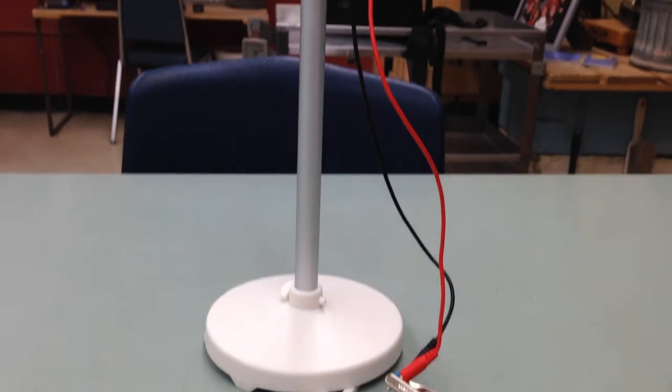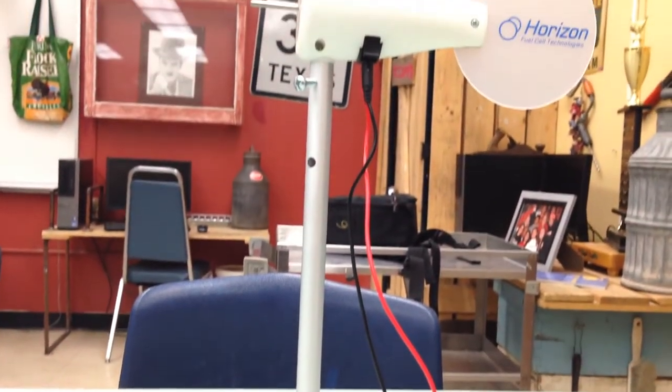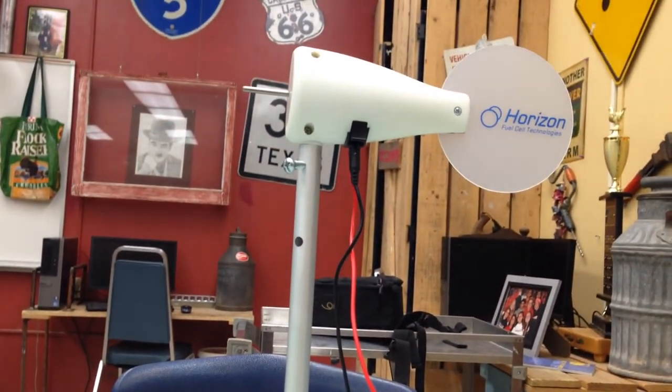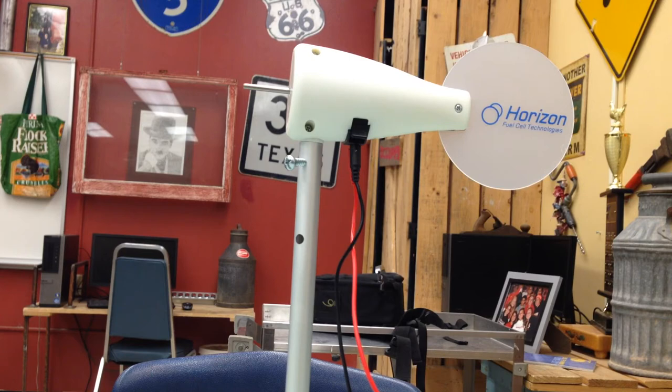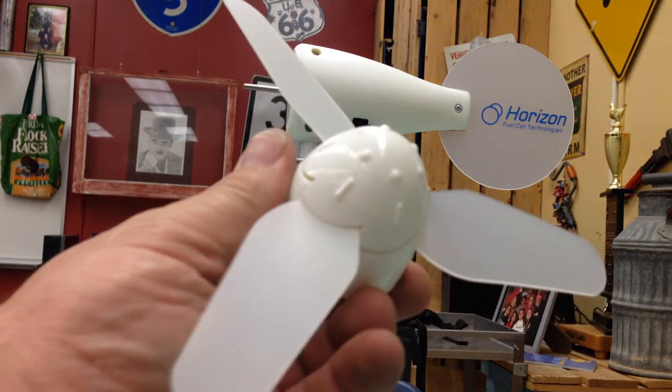This is what the turbine looks like. And then, of course, there is the nacelle where all the gears are and there's the axle. We're going to put the nose piece on the axle by kind of working it back and forth a little bit. There we go, the short bladed one.